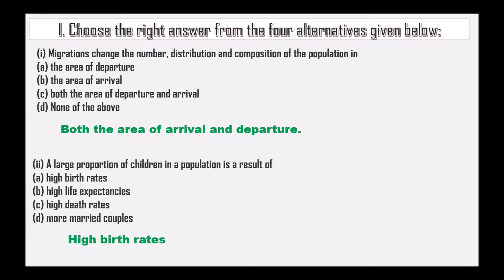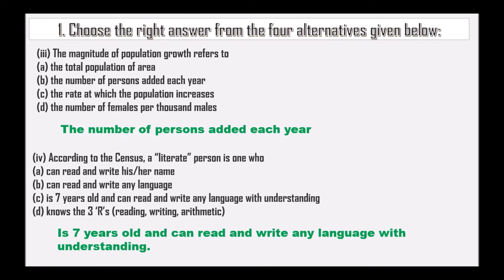The next option covers the number of persons in the population across both areas of arrival and departure. A large proportion of children in a population is a result of high birth rates. The magnitude of population growth refers to the number of persons added each year.